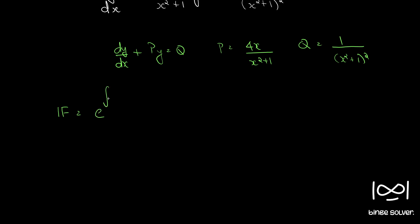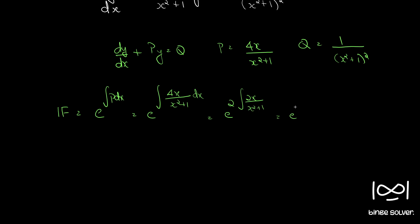The integrating factor for such a linear differential equation is given by e raised to the integral of P dx. So we have e raised to the integral of 4x/(x²+1) dx. Since the differential of the denominator is 2x, which appears in the numerator, we get e raised to 2·log(x²+1), which equals (x²+1)².